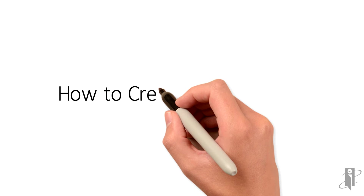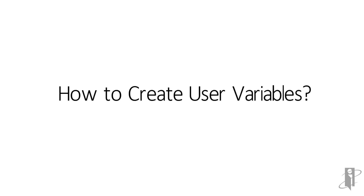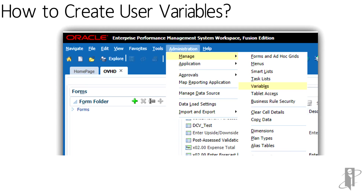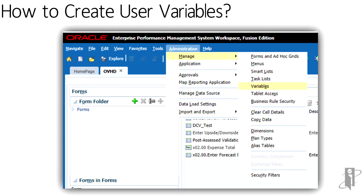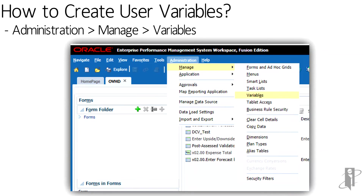How to create a user variable. In planning, select the application that you wish to add the user variable to. On the toolbar up top, select Administration, then Manage, and then Variables.